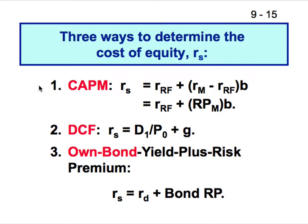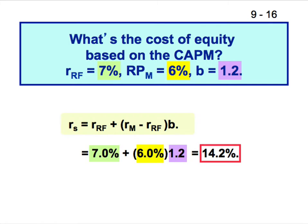For every five papers saying price-to-sales is a good indicator of expected returns, there'll be probably six papers saying that information is already reflected in price-to-cash-flow. Using CAPM: the cost of equity is the risk-free rate plus the risk premium times beta. With a risk-free rate of 7%, risk premium of 6%, and beta of 1.2, you get 14.2%. It's exact and precise, yet it's not — and that's how business is done.